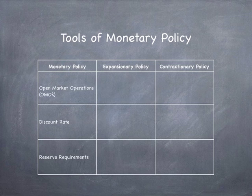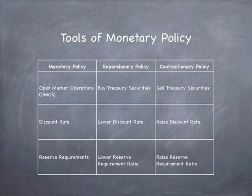Which tools of monetary policy are considered expansionary or contractionary? Expansionary policies include buying treasury securities, lowering the discount rate, and lowering the reserve requirement ratio. Contractionary policies include selling treasury securities, raising the discount rate, and raising the reserve requirement ratio.